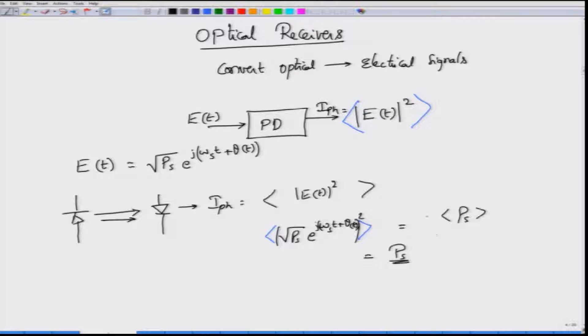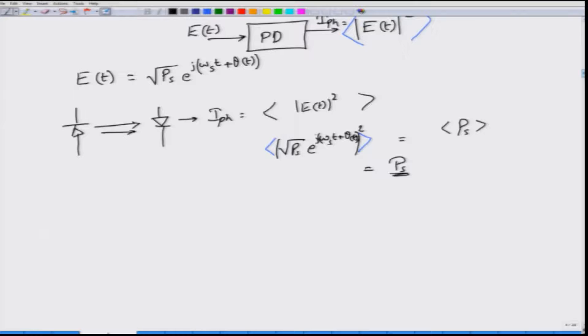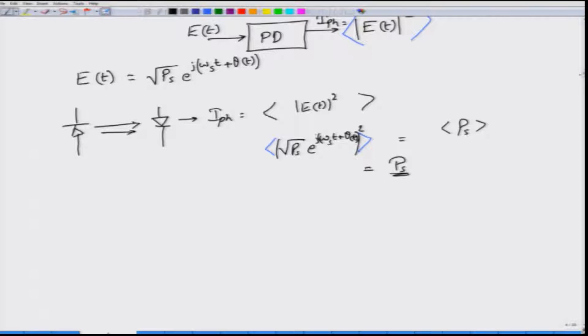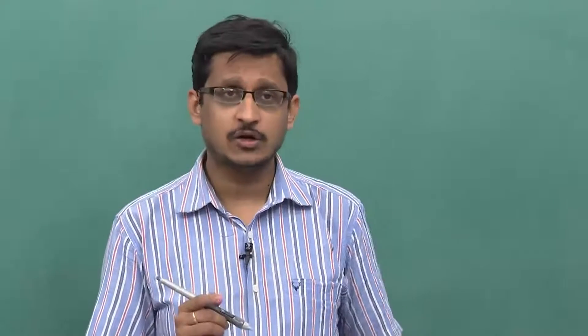Forget about the factor of one-half or other factors corresponding to cosine signals. What is important to note is that a photo detector or photo diode acting as a photo detector will generate an electrical signal — the photo current — given by the average value of |E(t)|². This is very crucial. We have seen modulation techniques which only alter the amplitude of the optical signal — amplitude shift keying discussed in earlier modules — as well as those which alter both amplitude and phase, and those which alter only phase.